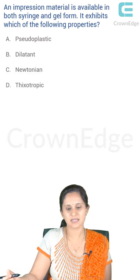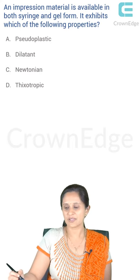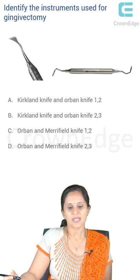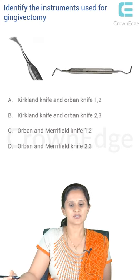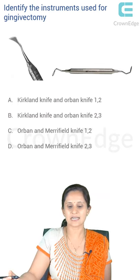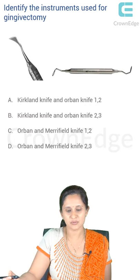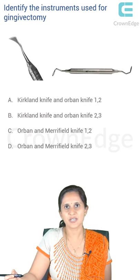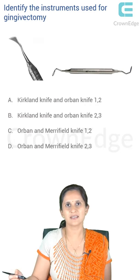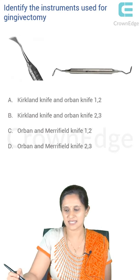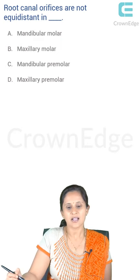Next question: identify the instrument used for gingivectomy. The answer is straightforward — it is Kirkland knife and Orban's knife one and two. An explanation is given so you understand the angulation of each of these knives.